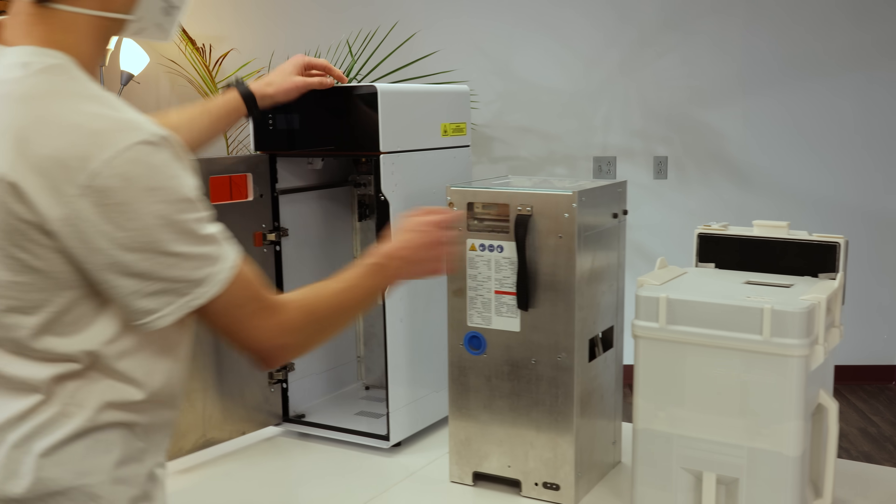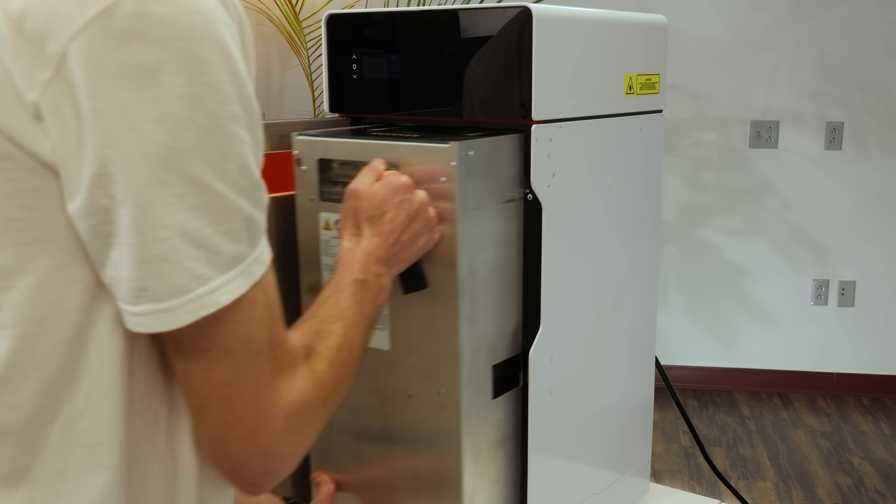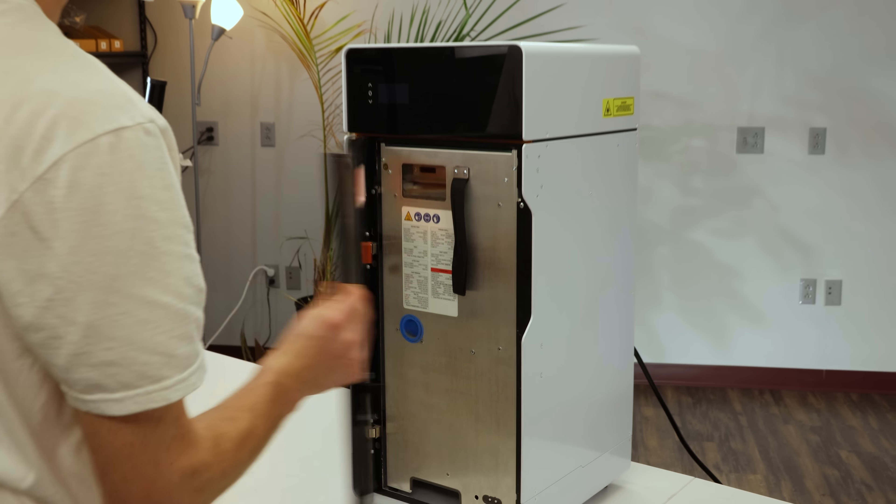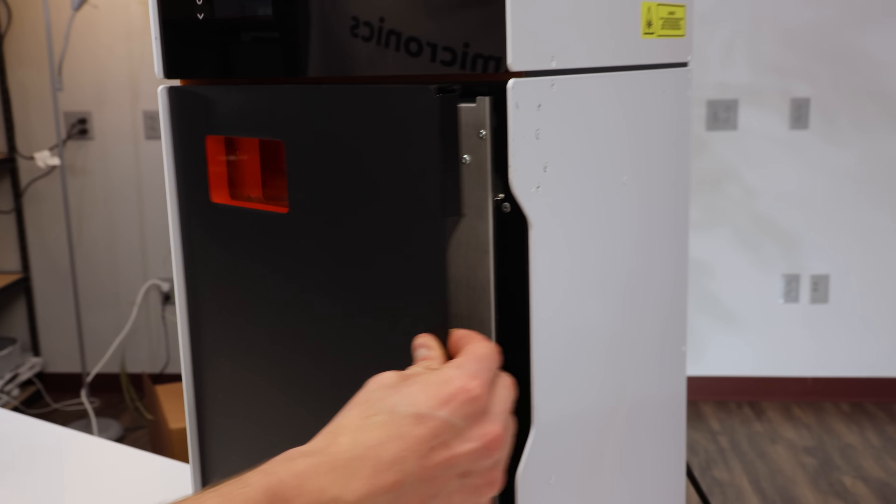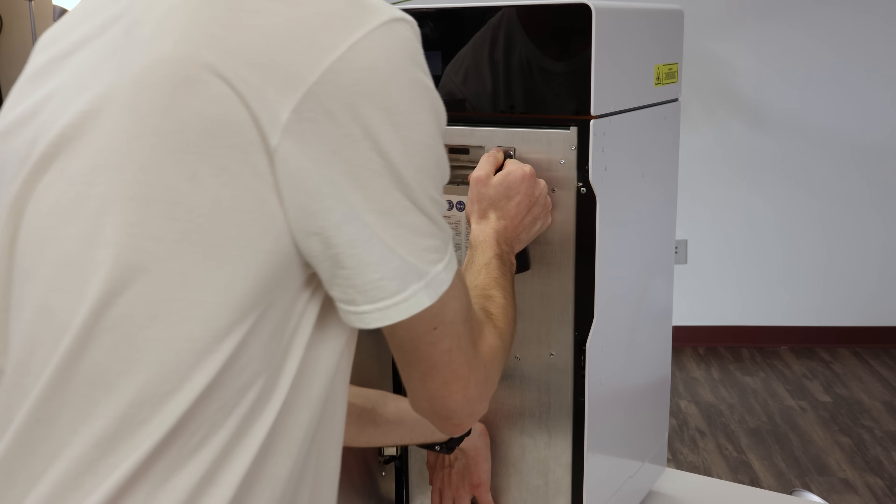For the final step, let's insert the chamber into the printer. Push it in firmly until it latches. When you close the door, ensure there's no resistance. If you feel resistance on the door, remove the chamber and reinsert it carefully. Don't force the door shut.